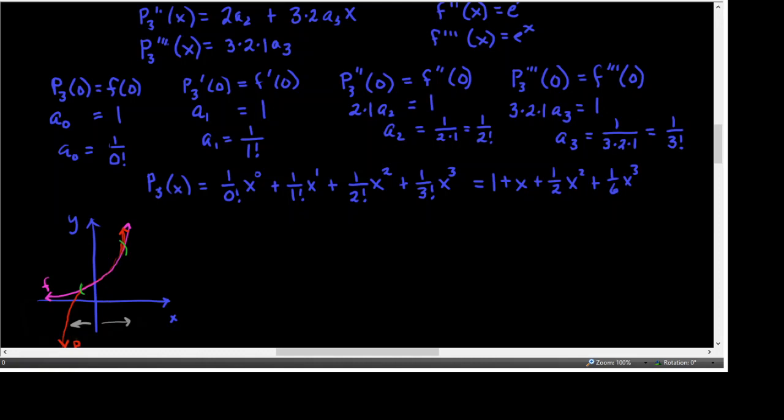We could go through that whole process again for P sub 4 — not a problem. But if we see a pattern and we're pretty sure our pattern is right, maybe we don't have to go through all that process. I'd like for you to take a second and commit to what you think P sub 4 of X will be — think if you can expand the pattern all by yourself.